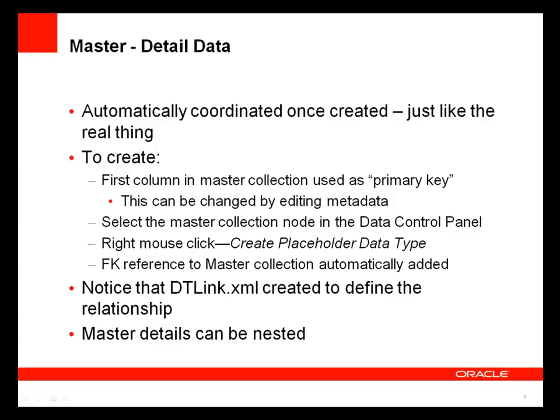The master-detail data for a placeholder data control can be automatically synchronized, just like with other data controls. You'll define that the first column in the master collection is used as a kind of primary key, and you can edit the metadata behind the placeholder data control to change that if necessary. You can create a detail collection node by selecting the master collection node and choosing Create Placeholder Data Type from the right-click context menu, which creates a link you can modify in the dtlink.xml file.